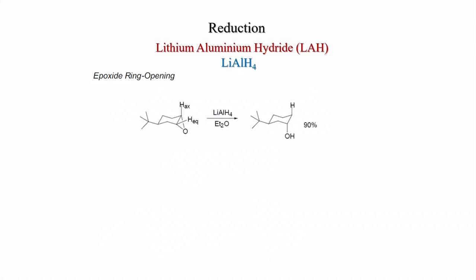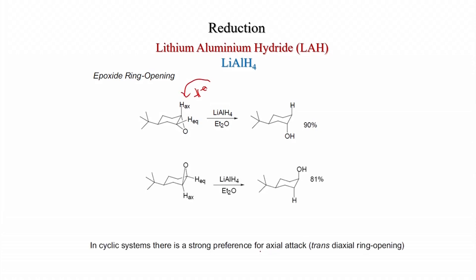For cyclohexane systems with an epoxide drawn on the down side, hydride delivery takes place axially (trans-diaxial ring opening), with a strong preference for axial attack. If the epoxide is up, attack is from the axial side giving the trans-diaxial product — the alcohol is generated at the position where the axial attack occurred.